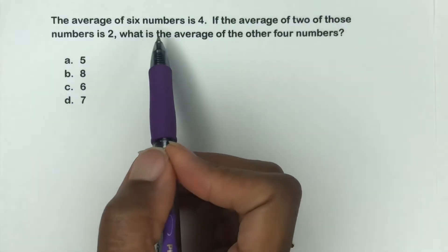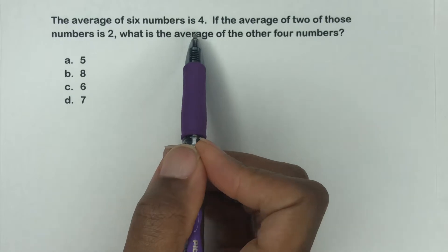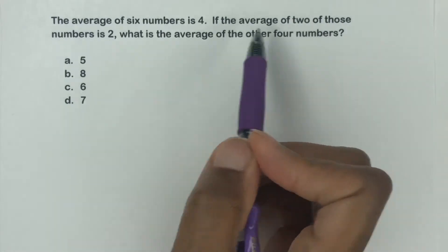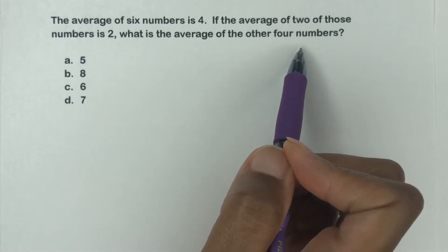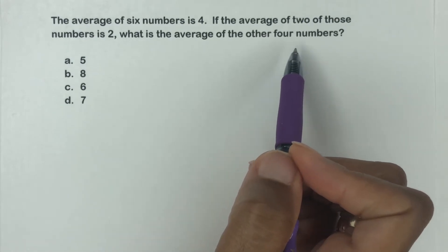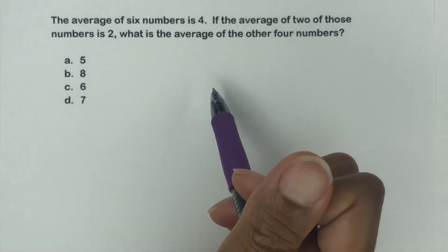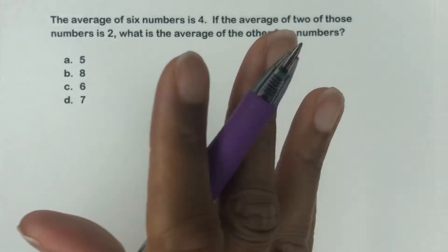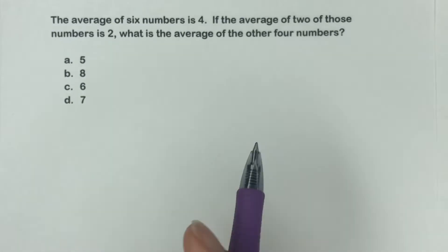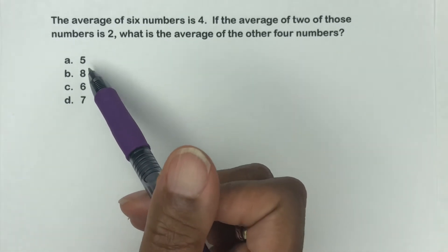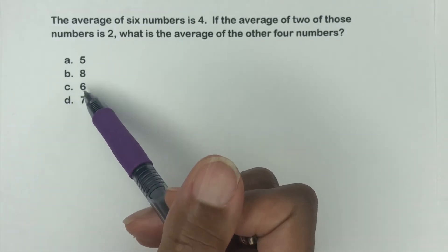So the average of six numbers is four. If the average of two of those numbers is two, what is the average of the other four numbers? I mean, reading it now again sounds a little crazy, but let's take it one sentence at a time or a piece at a time. So here we have our choices. We have five, is it eight, is it six, or is it seven?